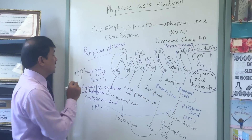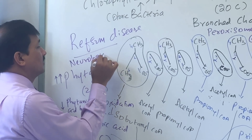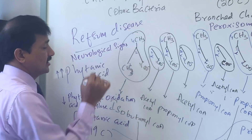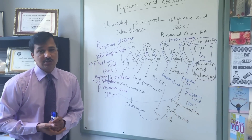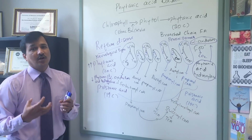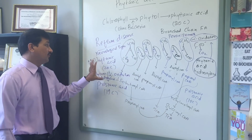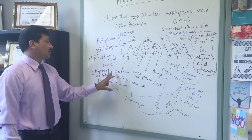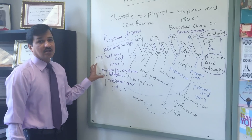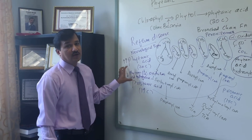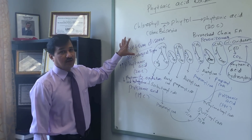Phytanic acid accumulation will affect neuronal tissue. Most of the time Refsum's disease is manifested with neurological signs. These neurological signs can include peripheral neuropathy, cerebellar ataxia, and retinitis pigmentosa. This is because of accumulation of phytanic acid due to defective alpha oxidation, most commonly from deficiency or mutation in the gene coding for phytanic acid hydroxylase enzyme.